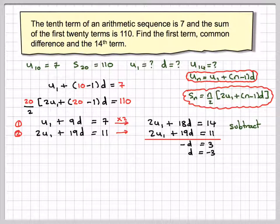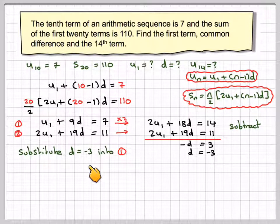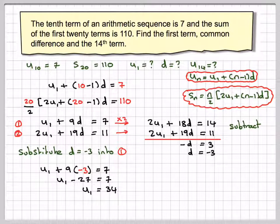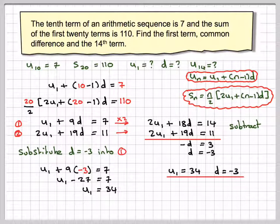Therefore D must be equal to minus 3. Substitute D is equal to minus 3 into equation 1. So we're going to have U1 plus 9 times minus 3 is equal to 7. U1 minus 27 is equal to 7. U1 is equal to 34. So we've got that U1 is 34 and D is minus 3.